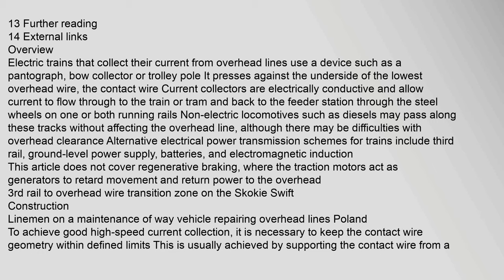Electric trains that collect their current from overhead lines use a device such as a pantograph, bow collector, or trolley pole. It presses against the underside of the lowest overhead wire — the contact wire. Current collectors are electrically conductive and allow current to flow through to the train or tram and back to the feeder station through the steel wheels on one or both running rails. Non-electric locomotives such as diesels may pass along these tracks without affecting the overhead line, although there may be difficulties with overhead clearance.